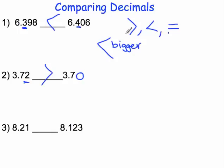Finally, in example 3, we are going to compare 8 and 21 hundredths to 8 and 123 thousandths. Again, we'll start at the ones digit here. We have an 8 in the ones digit. Because those are equal, we are going to move to the tenths digit.